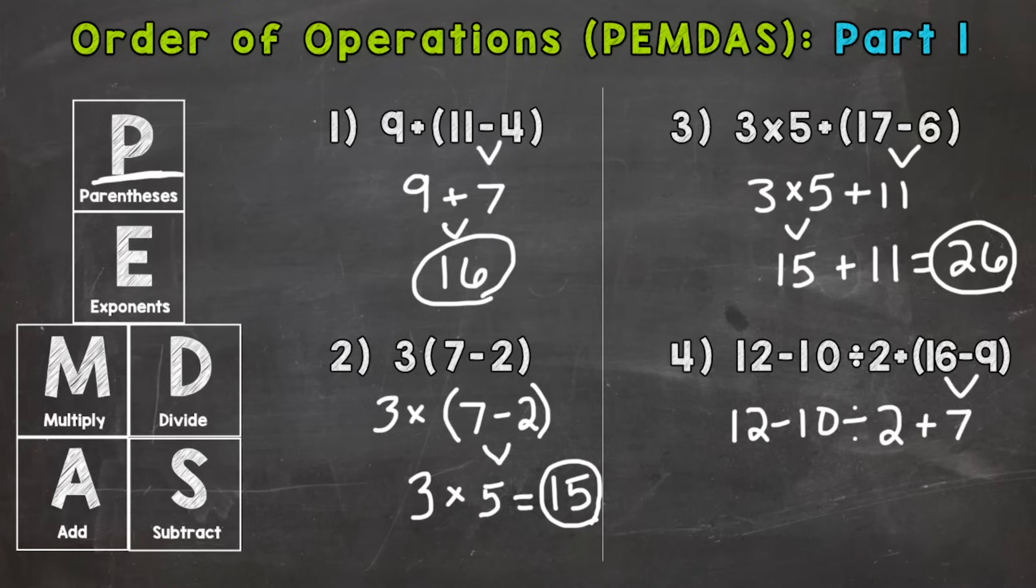So any parentheses? No. Any exponents? No. Any multiplication or division? Yes. So that's what comes next. Ten divided by two is five. Bring down everything we did not use.